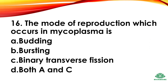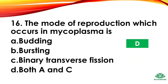Question 16: The mode of reproduction which occurs in mycoplasma is — options: budding, bursting, binary transverse fission, both A and C. The right answer: option D, both A and C — that is, by budding and binary transverse fission.